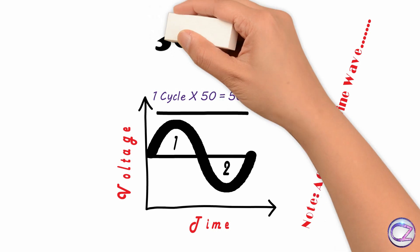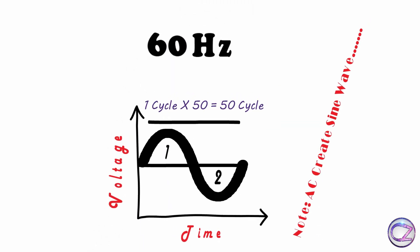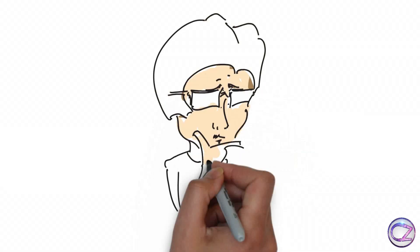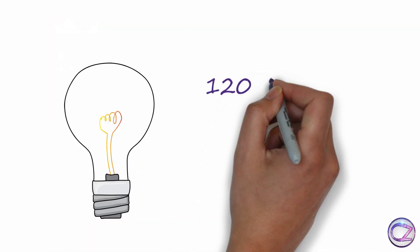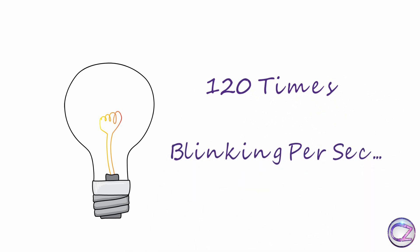On the other hand 60 hertz mean current changes direction 120 times. I mean 60 cycles per second. Now think. If AC lamp blinks 120 times in a single second, can you recognize that blinks?